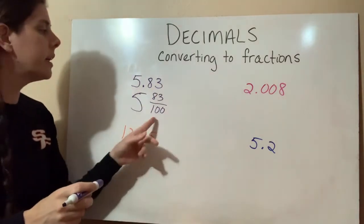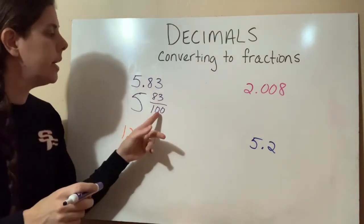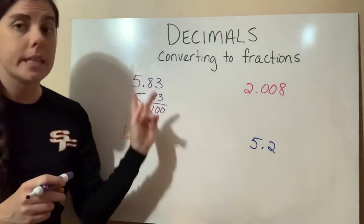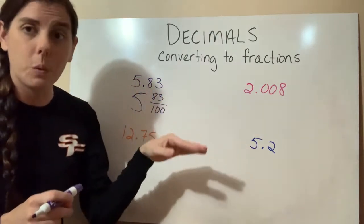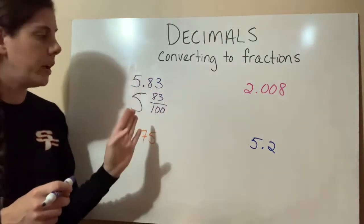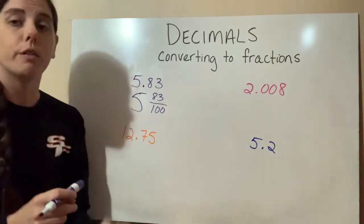We want to look at this 83 over 100 and see, can we reduce it? In this case, we can't, but in the other ones, we will. So in this case, we're fine. We can just leave it as 5 and 83 over 100.